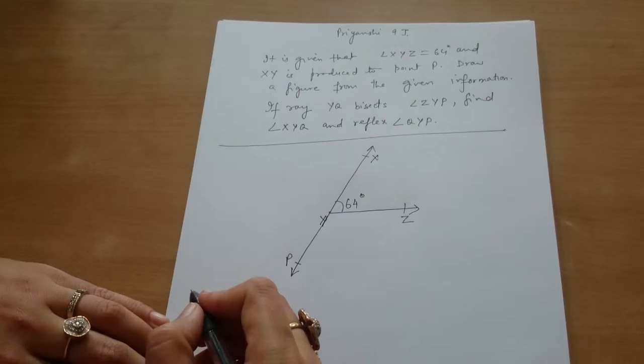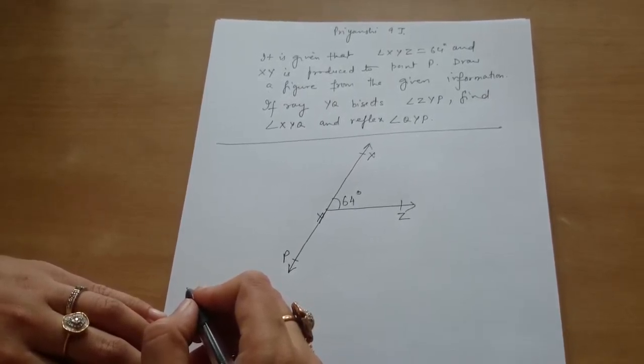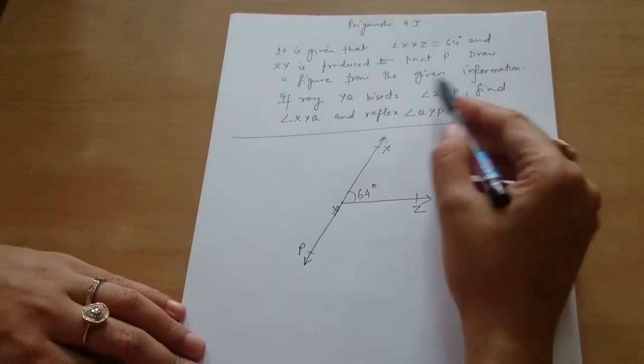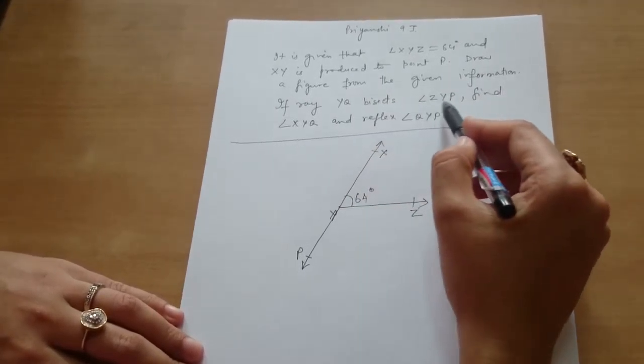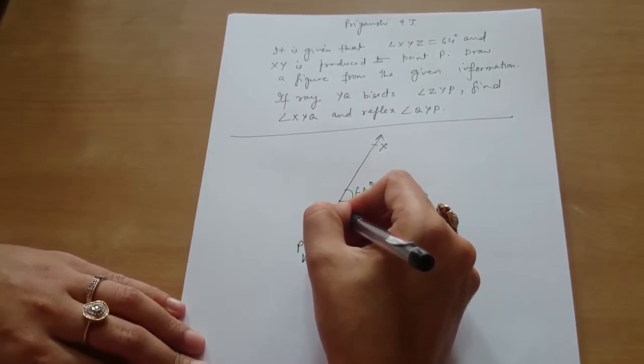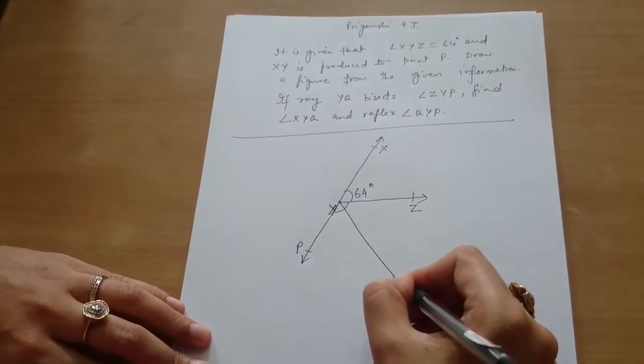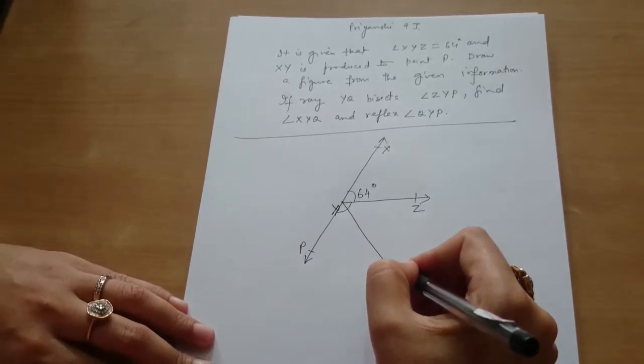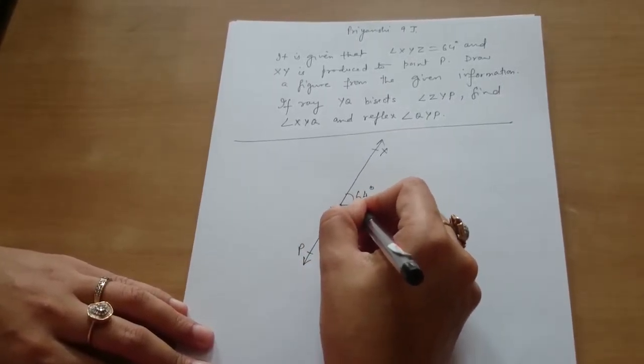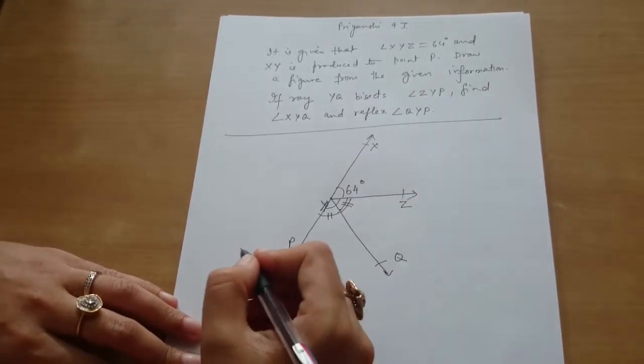It is also mentioned that YQ is the bisector of angle ZYP. So we will make ZYP. If ray YQ bisects angle ZYP, this is angle ZYP. And it is given that ray YQ is the bisector. That means this angle is equal to this angle.